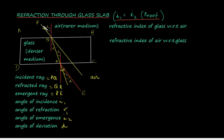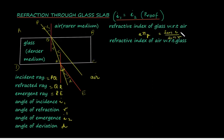Here i1 is the angle of incidence in the rarer medium, and i2 is the angle of emergence. So the proof is that the angle of incidence equals the angle of emergence. Starting the proof: the refractive index of glass with reference to air, written as n_g with reference to a, equals sin(i1) divided by sin(r1).